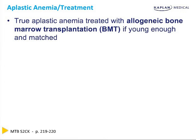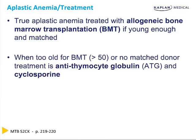With true aplastic anemia — pancytopenia of unclear etiology — if you're young enough, meaning under 50, you get an allogeneic bone marrow transplant. Over 50, at 55, 60, 70 years old, the transplant itself will kill you. If you're too old for a bone marrow transplant or there's no matched donor, then we use antithymocyte globulin — anti-T cell globulin — because T cells are what's rejecting your marrow.